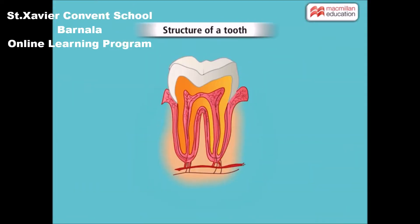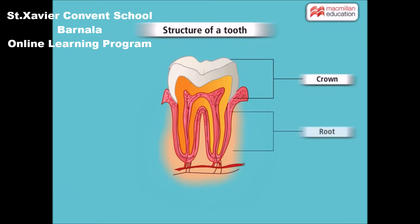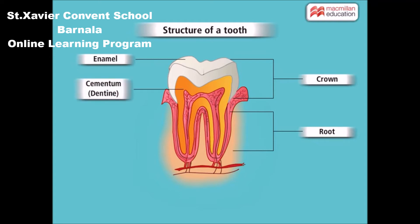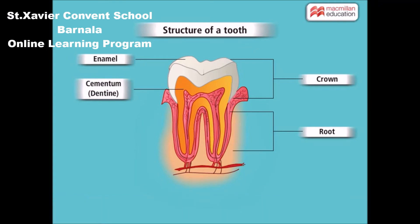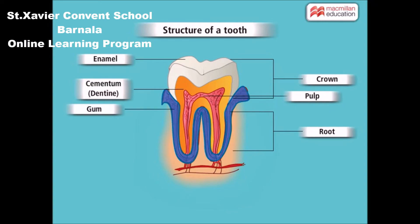Now let us learn about the structure of a tooth. The body of a tooth is divided into two parts. The upper part is called the crown, while the lower part is called the root. The root is fixed in the jaw and is hidden. The crown is made up of enamel, which is the hardest material in our body. Below the enamel, there is a bone-like material called cementum or dentine. Cementum helps to fix each tooth firmly into the jawbone. The centre of the tooth is known as pulp. The root portion of each tooth is surrounded by the gums that also cover the jawbone. The pulp and gums have blood vessels and nerves.